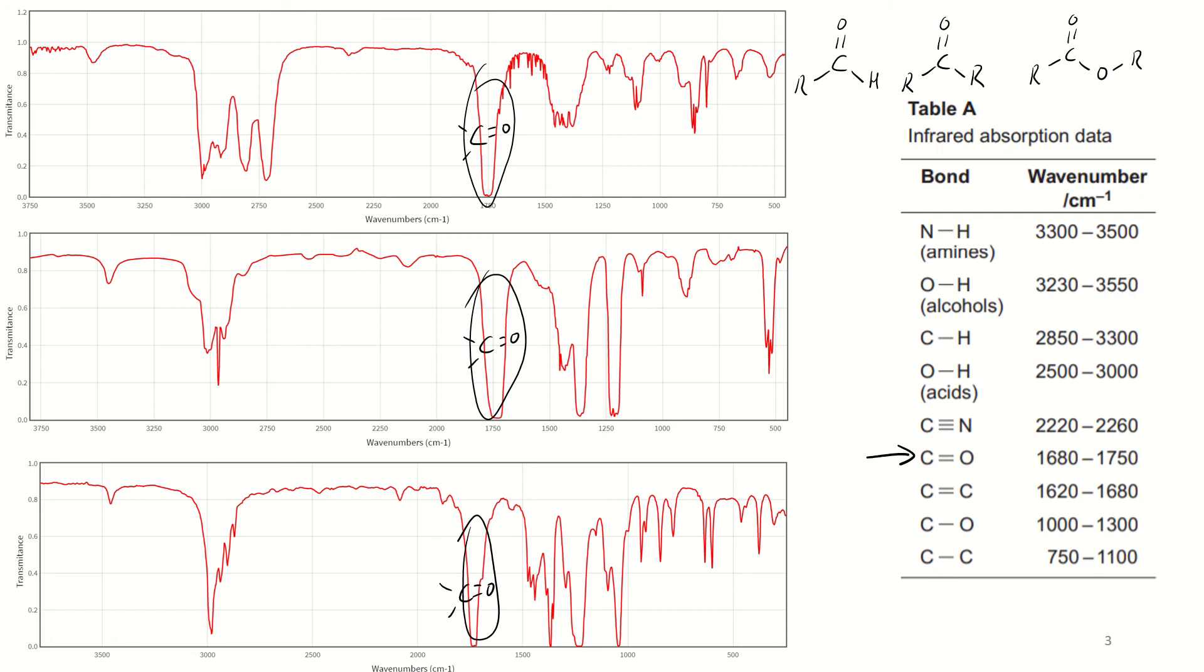So we need some more information to separate these out. Now, the aldehyde's the easiest to spot of the three. This is what's called a Fermi's doublet. It's a little sharp peak, 2720 to 2820, if my memory serves me right. And as we can see that's fairly characteristic of an aldehyde over the other two. They've all still got this CH in there. But the aldehyde's got those couple of extra peaks.